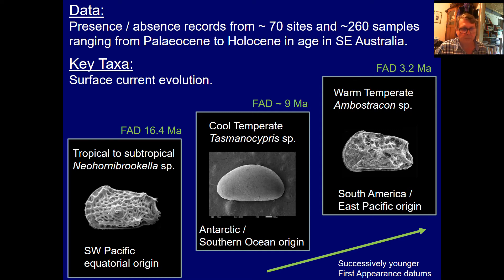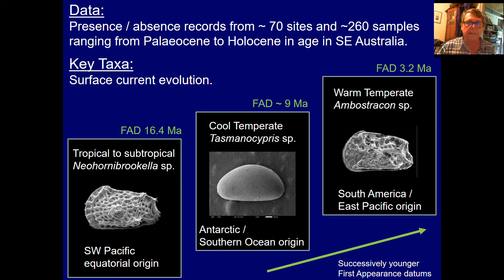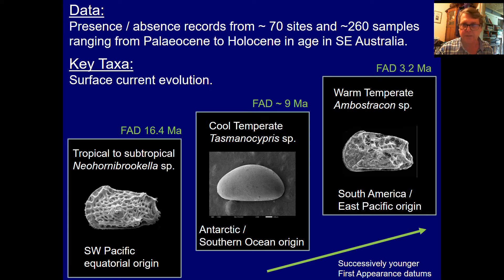When we look at the fossil record of these epiphytal taxa, they appear very suddenly — there don't seem to be any evolutionary forerunners within the stratigraphic record. They're completely new things that pop up. So when we look at their first appearance data and consider the global biogeography, we can start to make inferences about the ocean currents associated with their passive migration into this region, and hence the history of those ocean currents. But first appearance data are not the only thing we can look at — we can also look at disappearances and extinctions, which can be significant in terms of deciphering ocean current history.